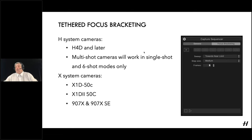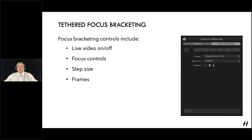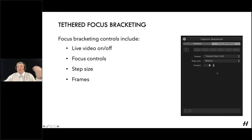H system cameras — basically H4D or later — are compatible. Even multi-shot cameras will work; currently single shot and six shot are enabled. X system cameras supported include the two X1Ds (the original and Mark II) and the two versions of the 907X. There are some subtle differences in the modes available. The focus bracketing tab has been added to the capture sequencer, with basic live view controls and focus step controls using arrows — the bigger the arrow, the bigger the step — plus frames and step size options, the same as camera functionality added last year.